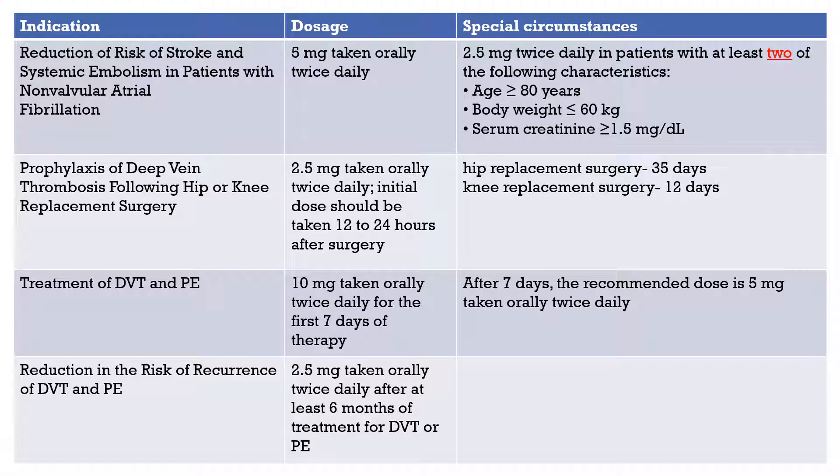For reduction of risk of stroke and systemic embolism in patients with non-valvular atrial fibrillation, the recommended dose of Eliquis for most patients is 5 milligrams taken orally twice daily. The dose is reduced to 2.5 milligrams twice daily in patients with at least two of the following characteristics: age greater than or equal to 80 years, body weight less than or equal to 60 kilograms, or serum creatinine greater than or equal to 1.5 milligrams per deciliter.